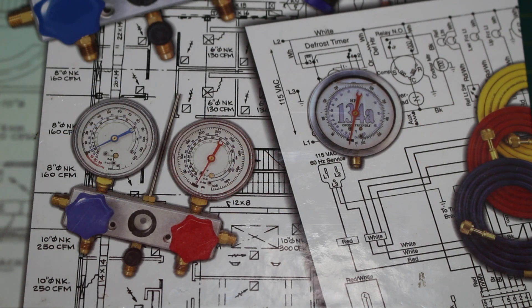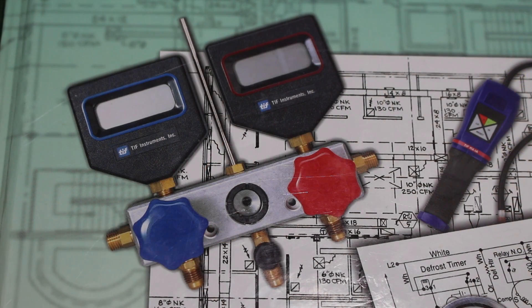To keep things simple, superheat is the temperature above its saturation temperature, and subcooling is the temperature below its saturation temperature. Let's begin with calculating superheat in real life.